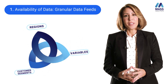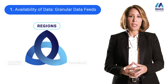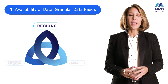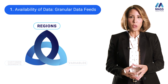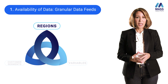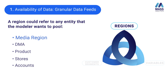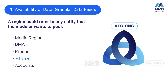The second element that allows us to achieve granularity in marketing mix modeling is the availability of what we call regional data. Regional data could refer to many things: it could be media regions, DMAs, products, stores, or accounts.